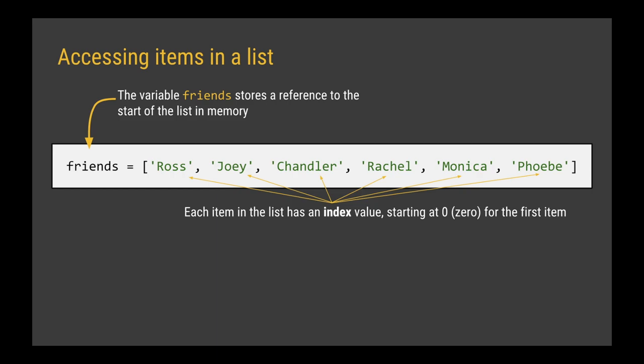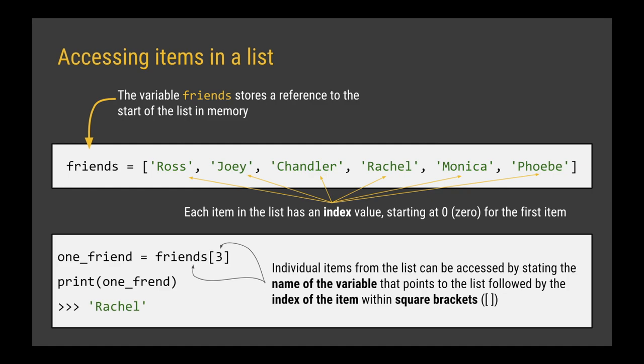If we want to access an individual item from the list, we need two things: the name of the variable that stores the list — so in this case 'friends' — and the index value for the item that we want. Here I've got an example where I'm saying I'm going to have a new variable called 'one_friend' which is equal to the value found in the friends list at index three — in other words, the fourth item in the list. If I print that new value, it will print the fourth item in the list, which in this case is Rachel. Let's have a look at that in Replit.